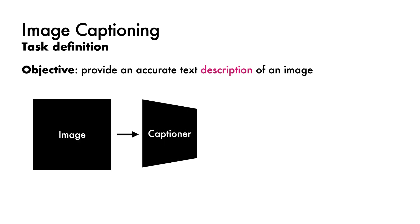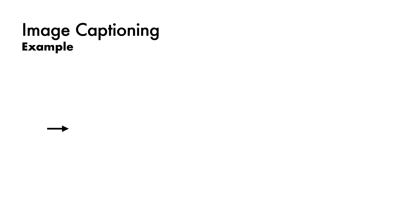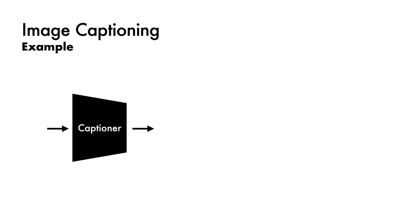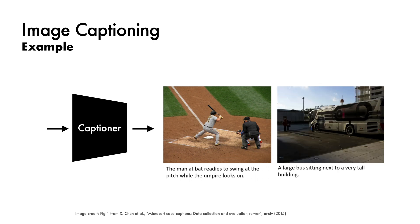Next, image captioning. The objective here is to provide an accurate text description of the image. Given an image, the captioner aims to produce a text caption describing the image contents. For example, a captioner is tasked with producing descriptions like 'the man at bat readies to swing at the pitch while the umpire looks on,' and 'a large bus sitting next to a very tall building.'